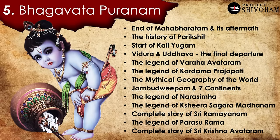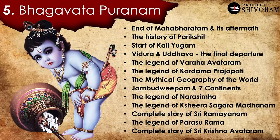Number 5, Bhagavata Puranam, also called Srimad Bhagavatam: it starts where Mahabharatam ends, elaborating on its aftermath, the history of Parikshit Maharaja, the start of Kali Yuga and how it would unfold. It also covers the conversation between Uddhava and Vidura before their final departure, the legend of Varahavataram, Kardamaprajapati and his progeny, the mythical geography of the world including Jambudvipam and the seven continents, the legend of Narasimha Swami, Kshira Sagar Madhanam, the complete story of Sri Ramayanam, the legend of Parasurama, and the complete life history of Sri Krishna.